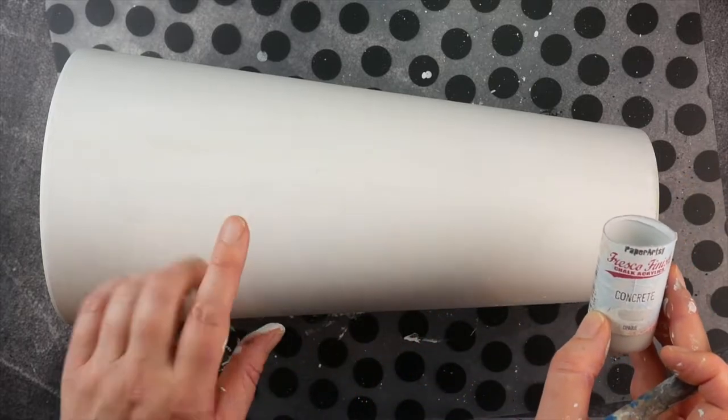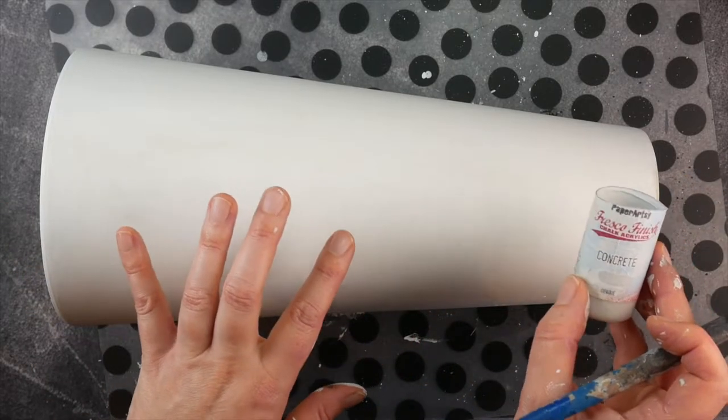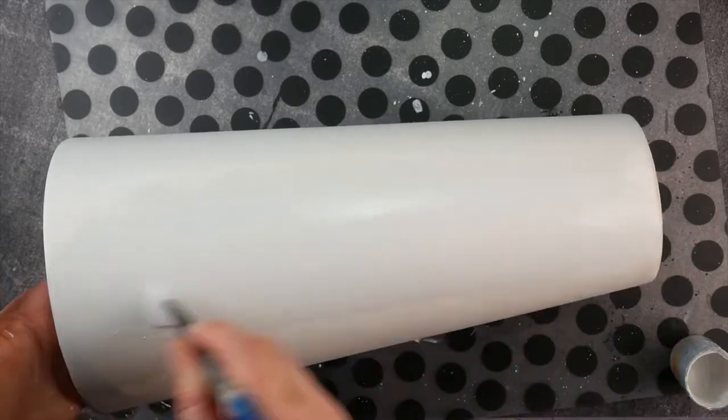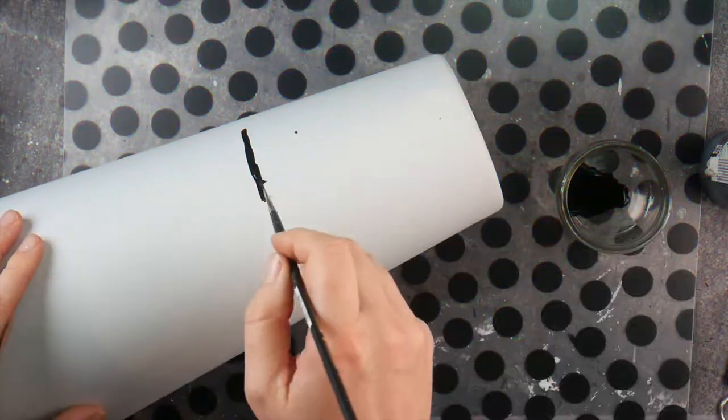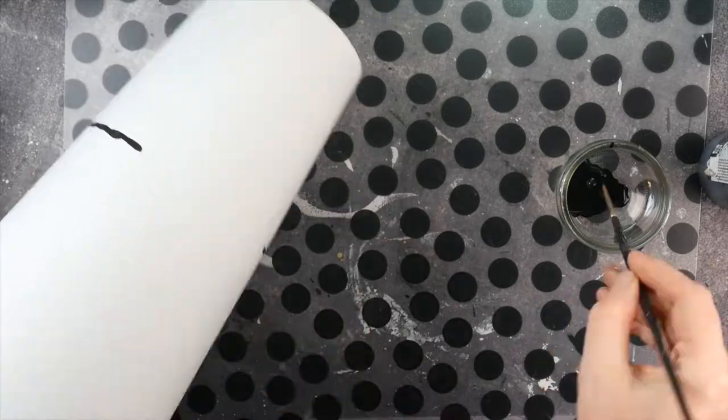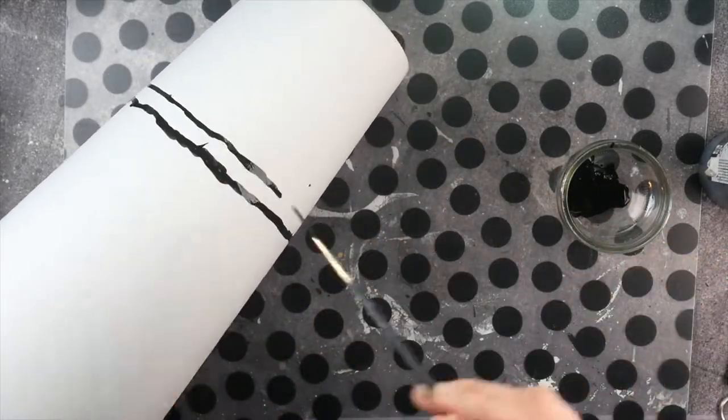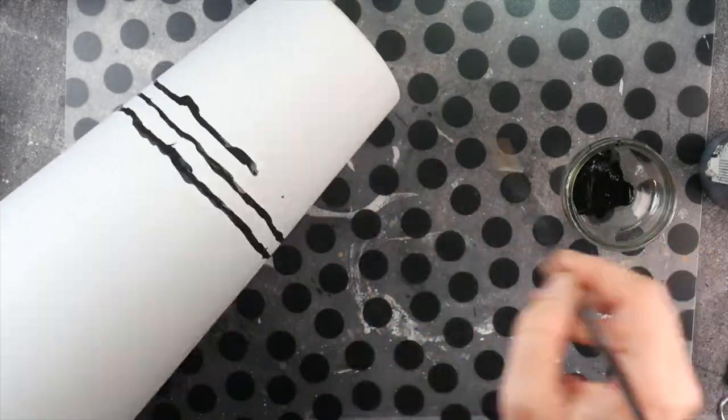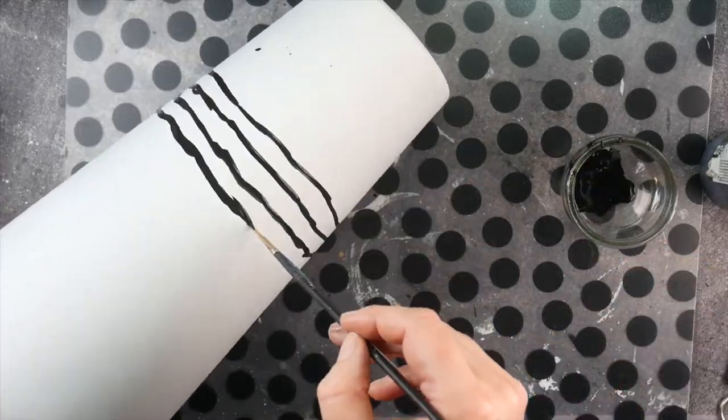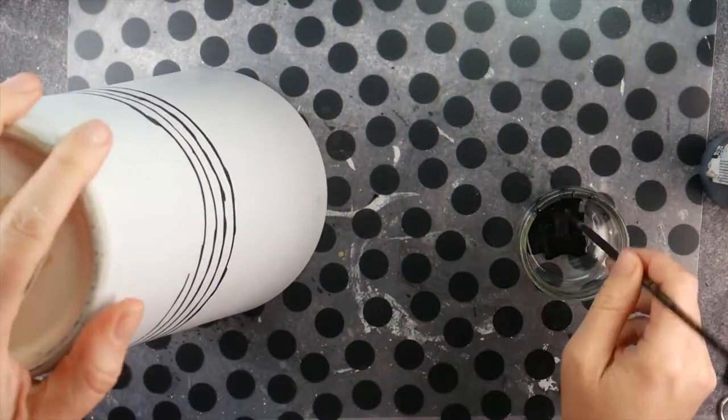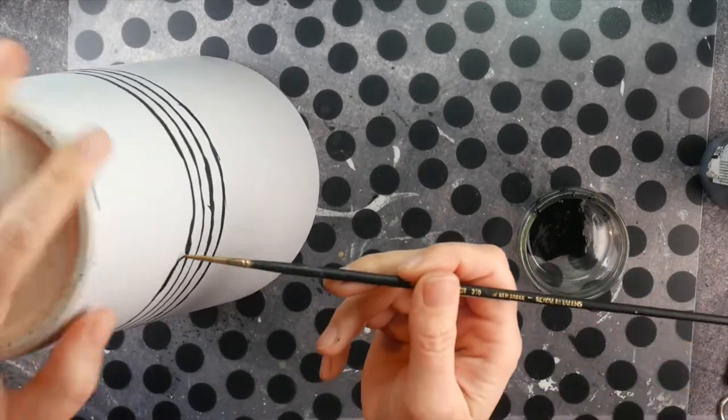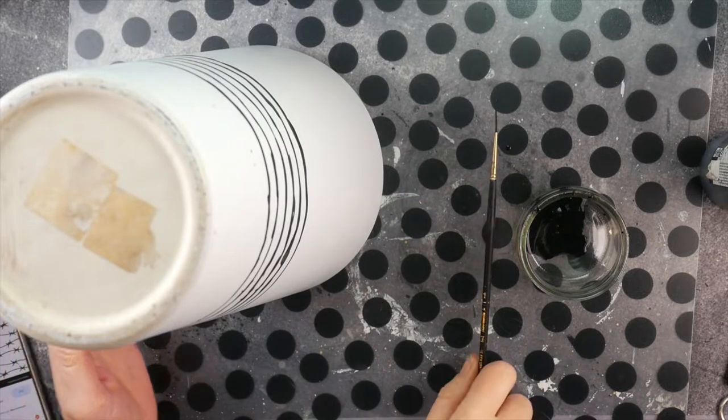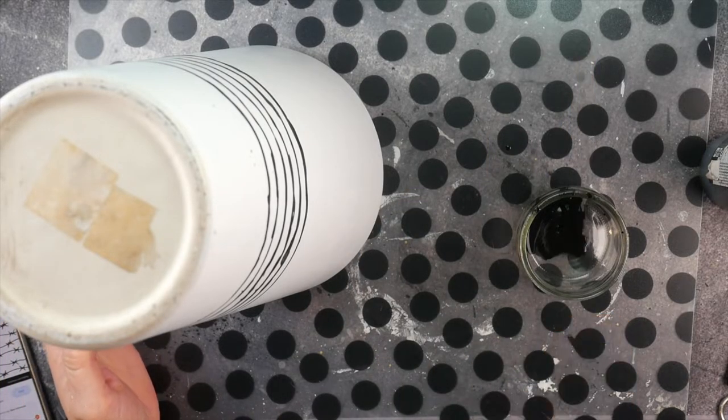I think I'm going to leave this vase really simple with gray and black. I'm going to leave the back. Sorry, I put the brush in my mouth. Six stripes.